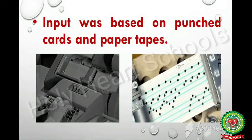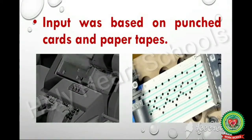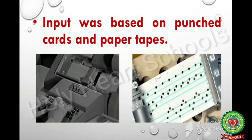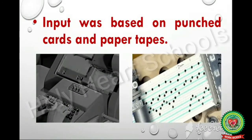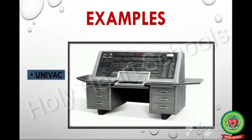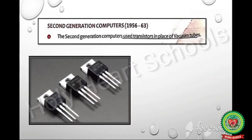Output was displayed on printouts. These computers were slow, expensive, and large in size. Examples of first generation computers are ENIAC, EDVAC, and UNIVAC.